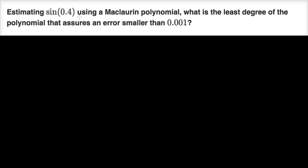Estimating sine of 0.4 using a Maclaurin polynomial. What is the least degree of the polynomial that assures an error smaller than 0.001?